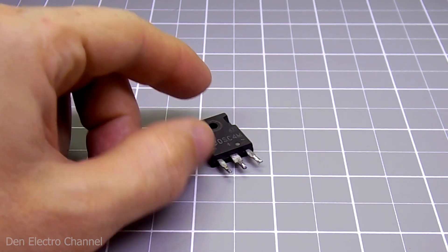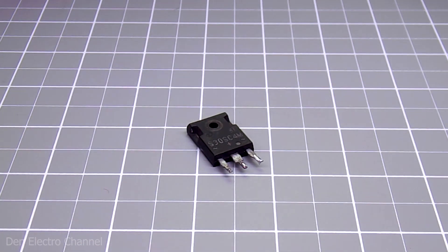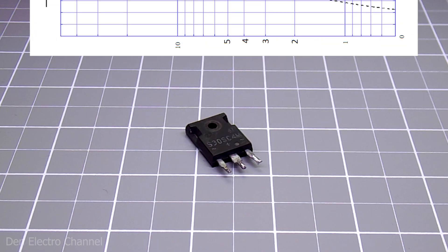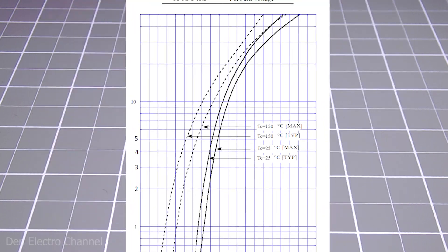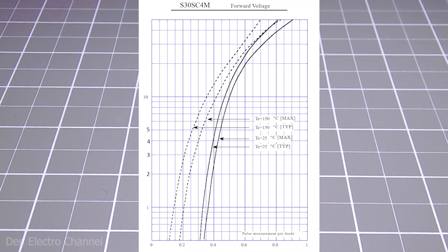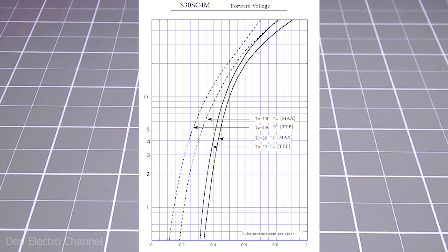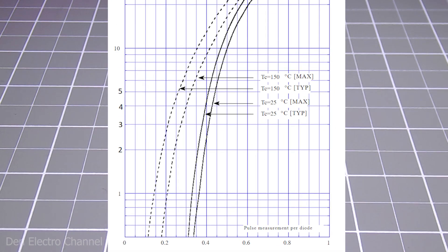it is not necessary to make your own measurements and load it up to 15 amps. This information can be found in the documentation for this diode assembly. There is a graph with a volt-ampere characteristic. It can be used to find out what voltage will drop across the diode when a certain current passes through. Let me explain how to find out.